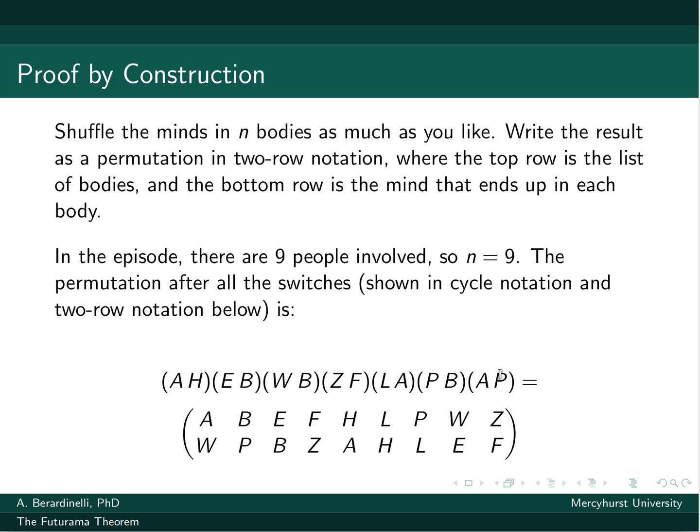Those are all the swaps that happen in order in the episode. And if you multiply those out and write it in two-row notation, this is what it looks like. So if you don't believe me, pause here and then practice your skills from yesterday where you're multiplying permutations. And you should get this permutation if you write it in two-row notation.